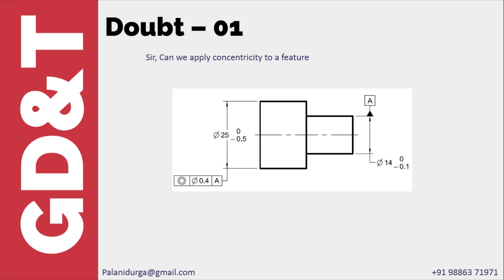Concentricity is applied to a surface of revolution — nothing but the feature itself. This surface and this diameter simply tell us that the tolerance zone is cylindrical, and it has nothing to do with feature of size.